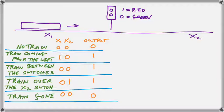So I've written there in the green what is the actual condition. No train. Train coming in from the left. Train between the switches. Train over the X2 switch. Train gone.